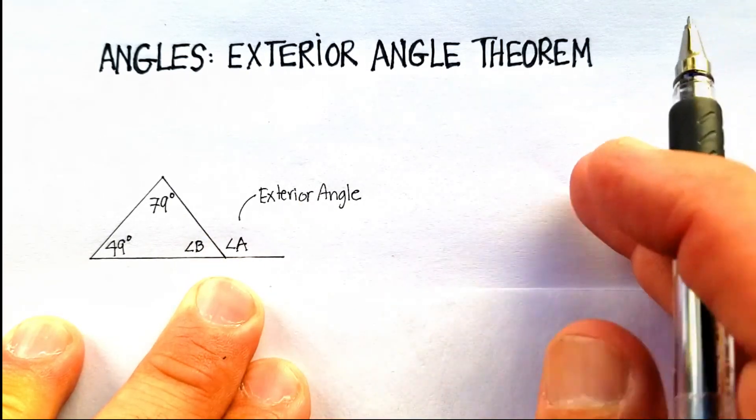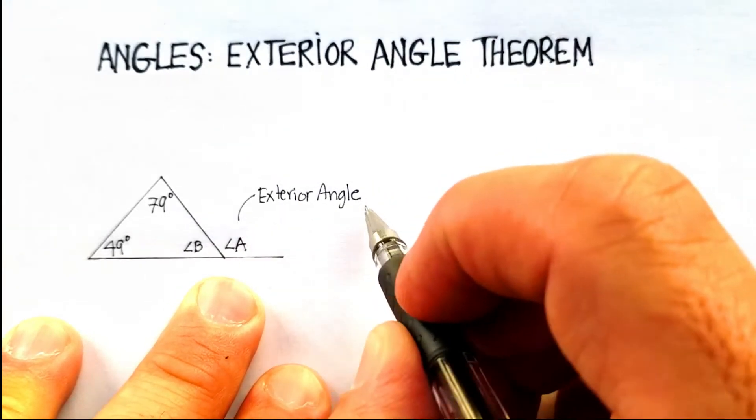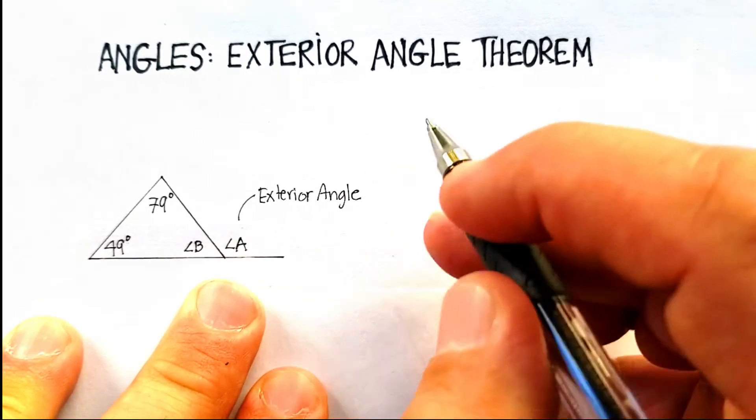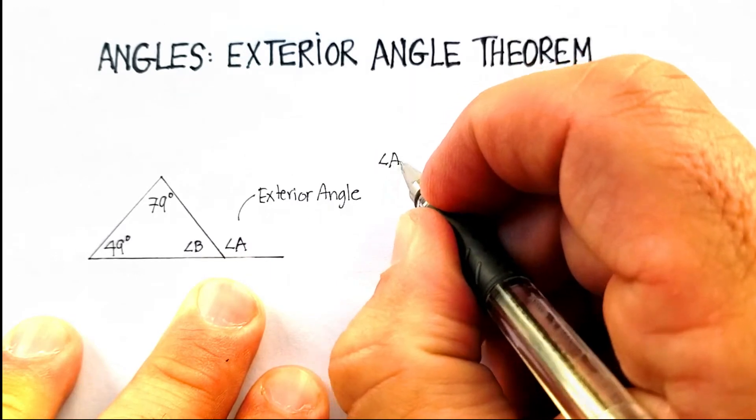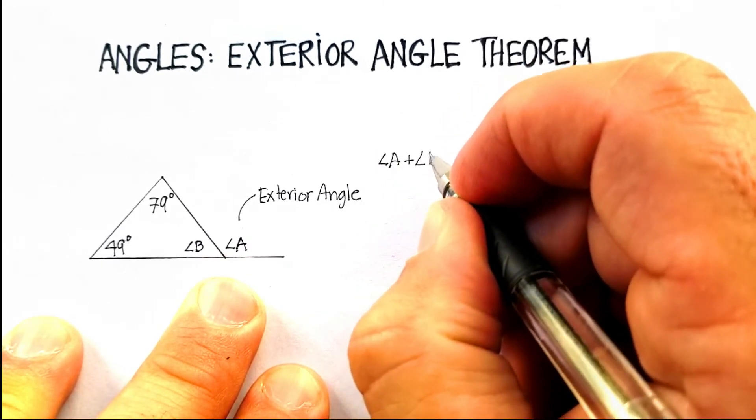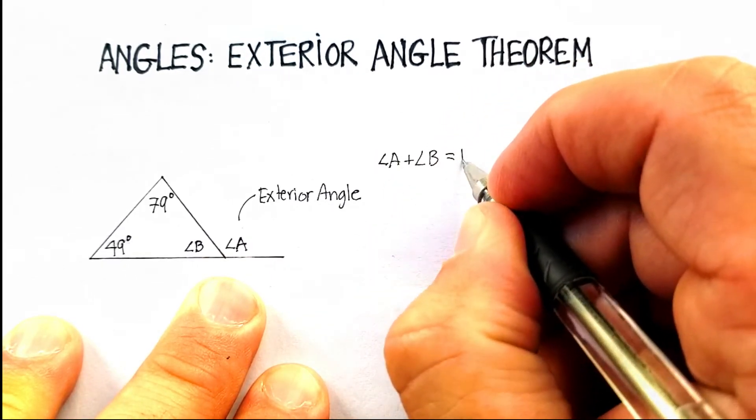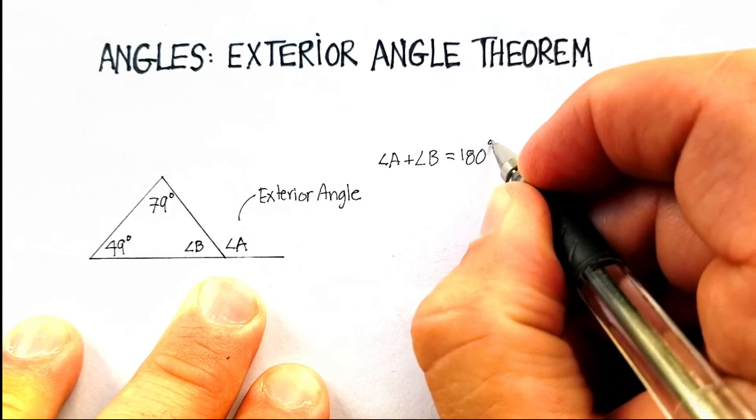Now, what does that mean for this particular example? Well, we know that A plus B will equal 180. That was the very first corollary that I said. So angle A plus angle B will be equal to 180 degrees.